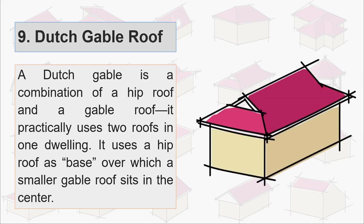Ninth is dutch gable roof. A dutch gable is a combination of hip roof and a gable roof. It practically uses two roofs in one dwelling and it uses a hip roof as a base over which a smaller gable roof sits in the center.